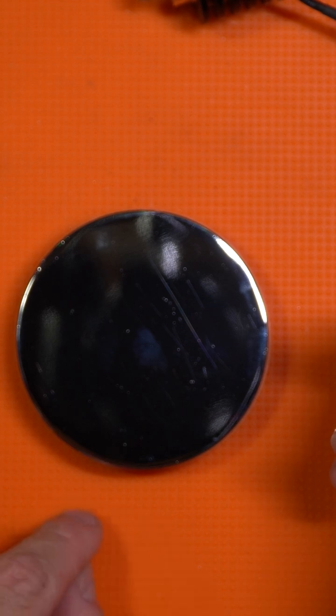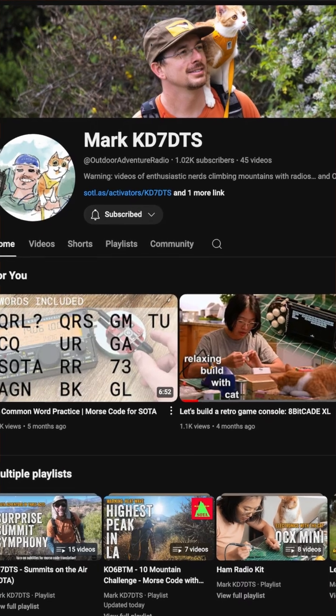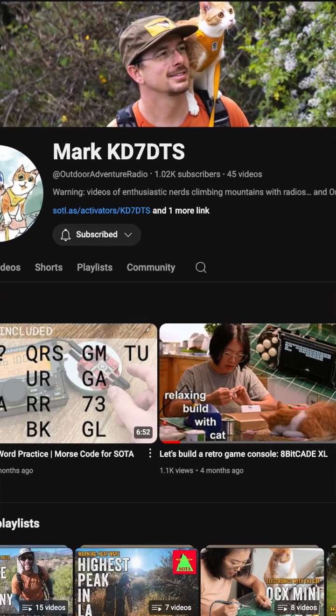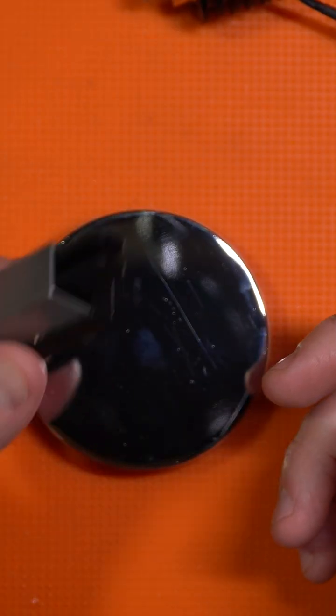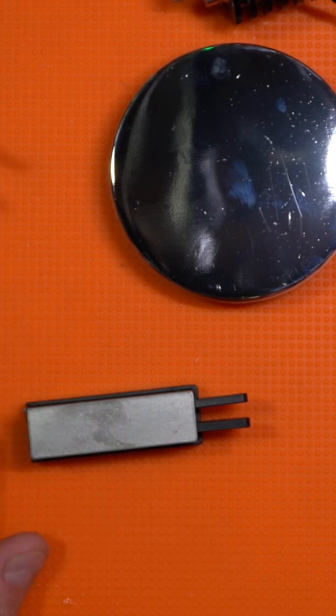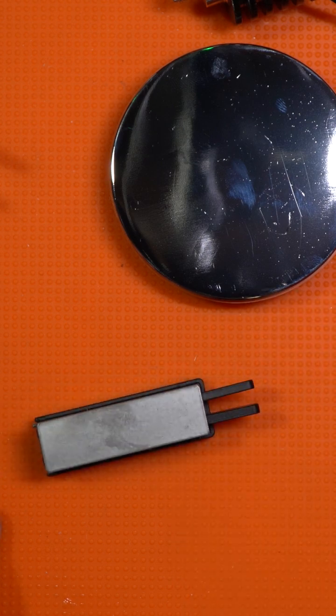This was a recommendation from Mark KD7DTS and POTA SOTA activators do when they're portable in that they have their key, and if they're at a park bench and they're trying to key with it, it just flopping all over the place.